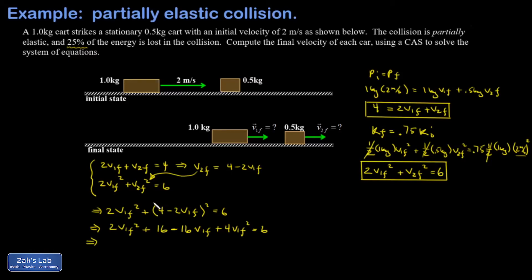I can divide by 2 and combine like terms. I have 6V1 final squared, dividing by 2 gives 3V1 final squared. Subtracting 6 from both sides gives 10 on the left, divided by 2 is 5. Moving everything to the left leaves 0 on the right. The linear term divided by 2 is minus 8 V1 final.